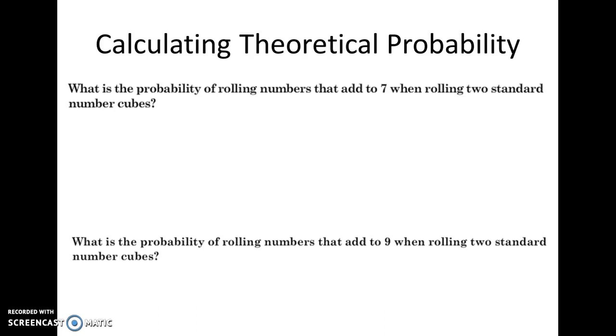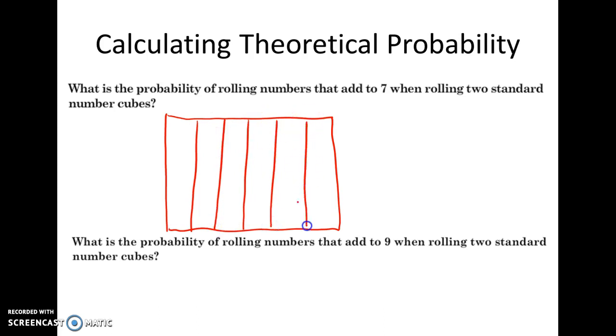So here's an example of theoretical probability. What's the probability of rolling numbers that add to seven when rolling two standard number cubes? So the best thing to do here would probably be make a grid. Mine is going to be really ugly, because I'm drawing on a screen.